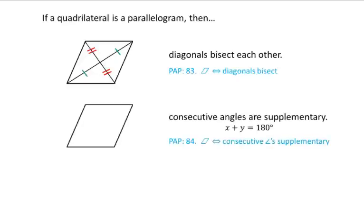And last, if a quadrilateral is a parallelogram then the consecutive angles are supplementary. We know opposite angles are congruent, so the x's are across from each other and the y's are across from each other. The consecutive angles are supplementary, so that means x plus y is equal to 180 degrees. Those are the five rules that you need to have memorized about parallelograms.